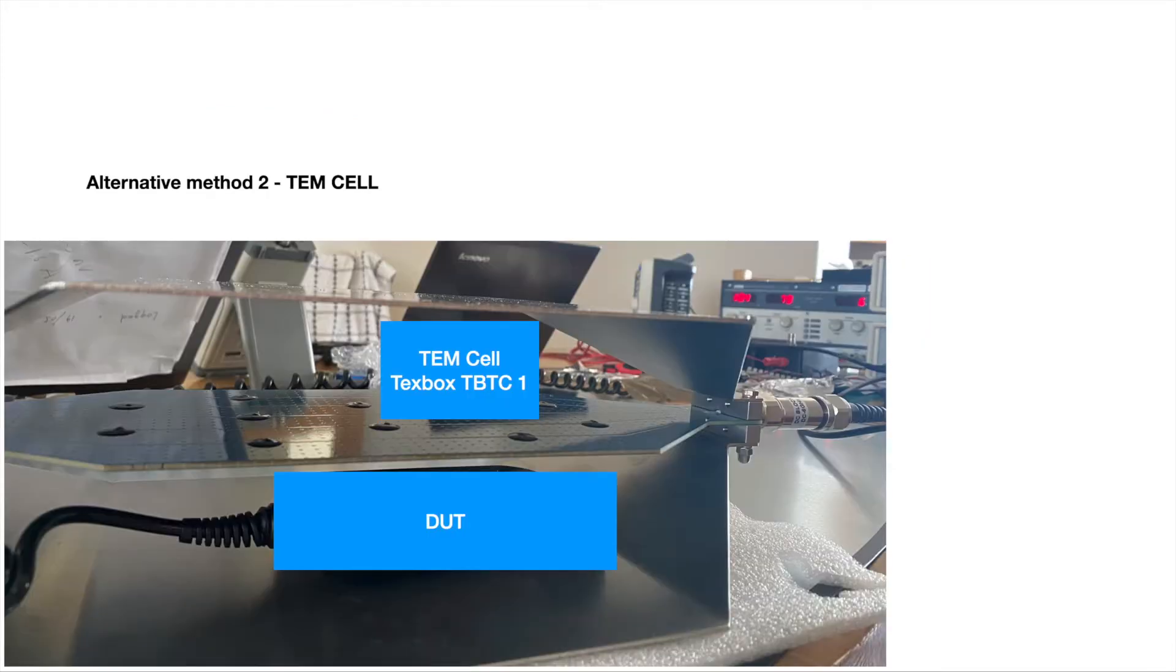The second alternative method we tried is to use a TEM Cell. As you can see here, we use TechBox TBTC-1 TEM Cell. In my opinion, the TEM Cell method should work quite nicely because I read the papers published by many academics and industrial companies. They successfully demonstrated that by using TEM Cell, they can achieve similar level of BCI interference on the module on the test.